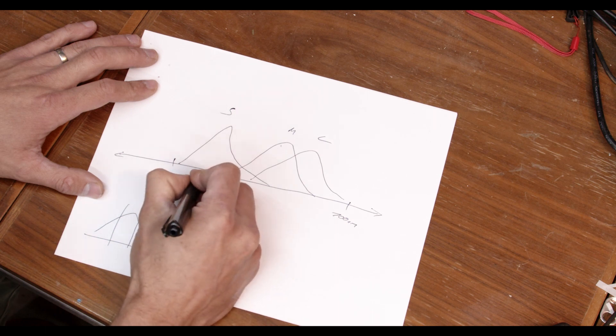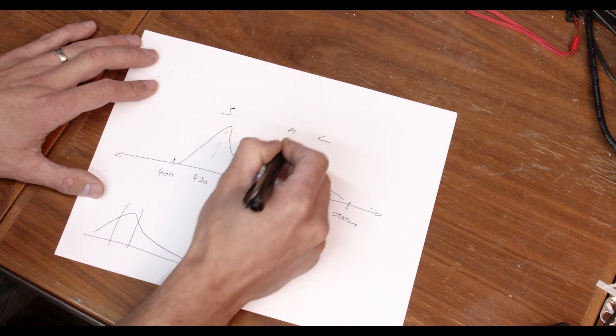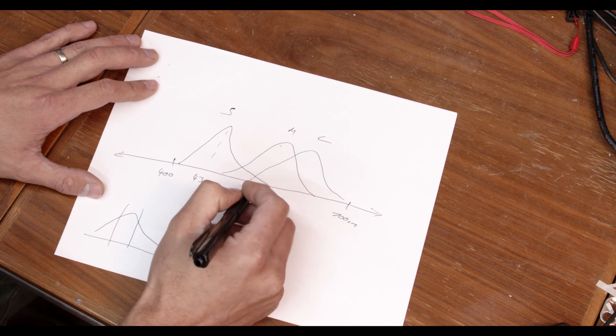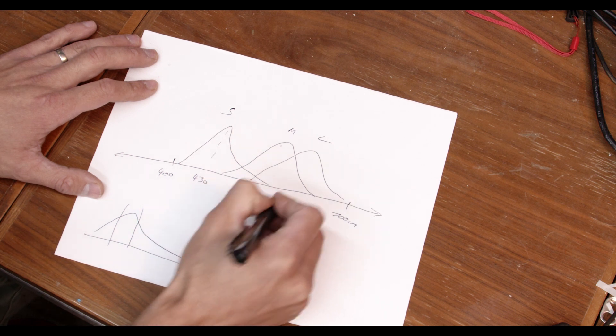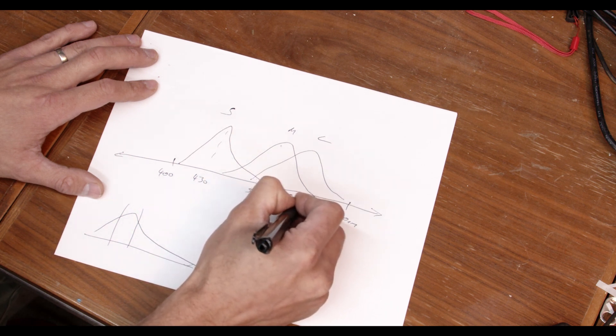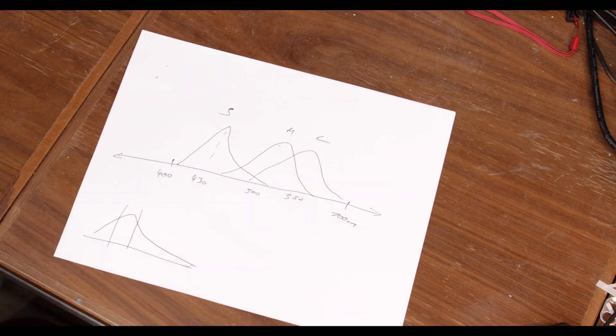This is around 430 nanometers peak. This is like 500-ish, and this is like 550. These guys overlap a lot. These are just rough numbers.